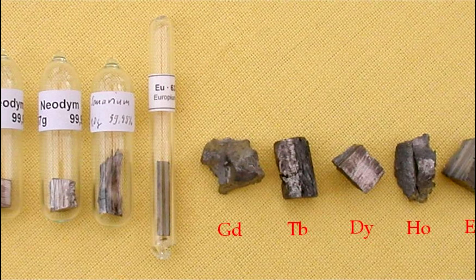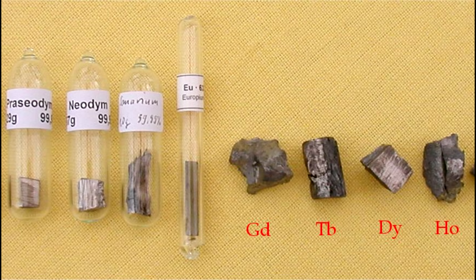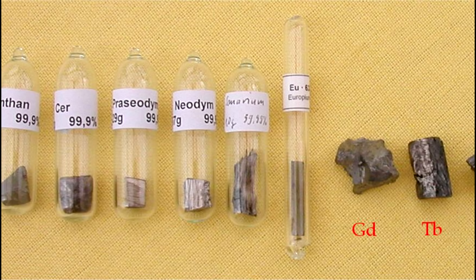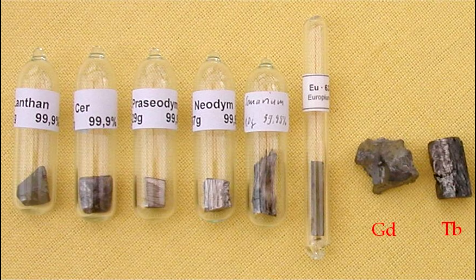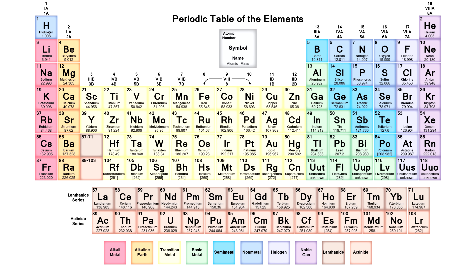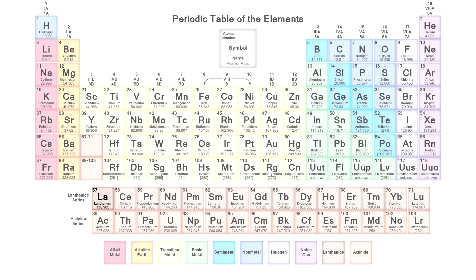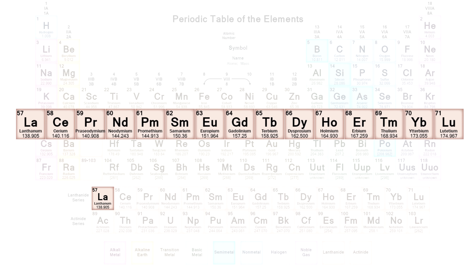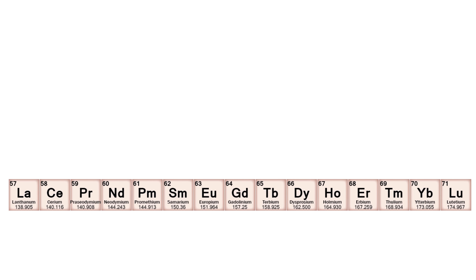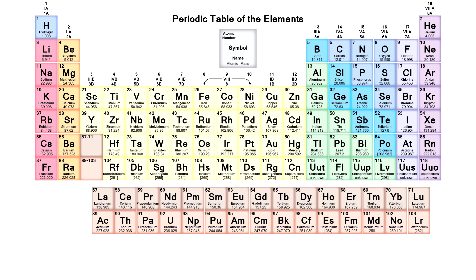Hello everyone! Today I will continue the series of videos about the lanthanide metals and will also talk about such metal as lanthanum. Lanthanum is located at the beginning of the lanthanide series of metals, and from this metal the name was derived for the whole series of metals with similar properties, the so-called F metals.